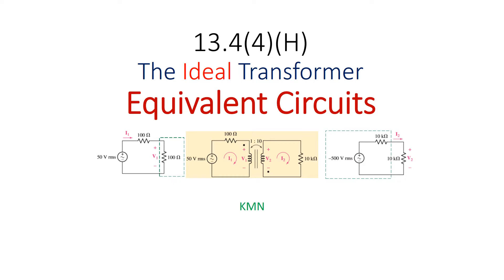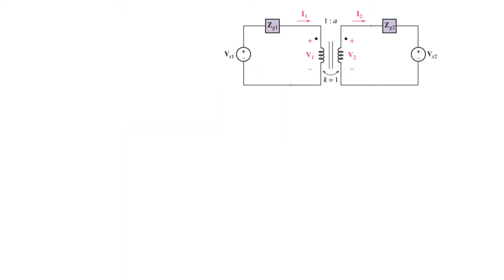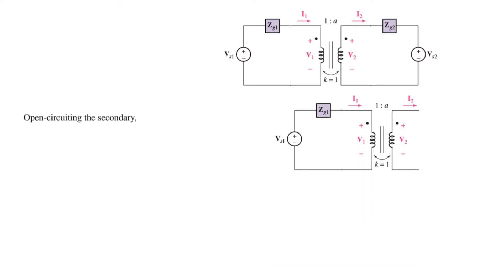In this video, part of the ideal transformers series, we will be talking about equivalent circuits. To build the concept, let's consider the circuit with transformer primary voltage, secondary voltage, source voltage, source impedance, output source voltage, and load impedance. The first step to derive the formula is to open the secondary.